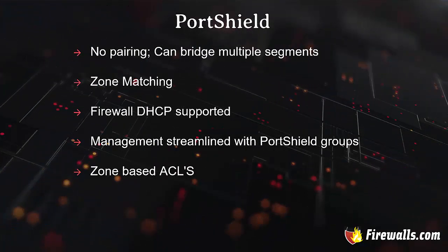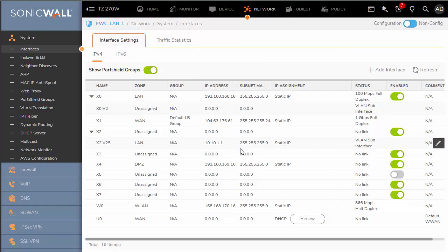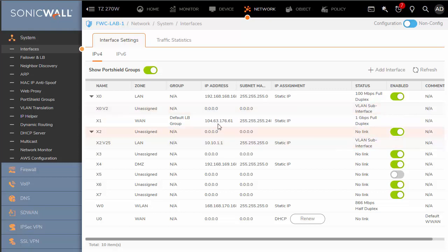Moving on to port shield mode. There is no pairing, but we can bridge multiple segments — in fact as many segments as you have interfaces. The interface must be assigned the same zone as the interface being port shielded to, and firewall DHCP is supported. These port shielded interfaces are lumped into port shield groups, making it easier to manage zone-based access control lists. Use port shield instead of layer 2 bridge when you need DHCP service from the firewall or you have a need for multiple segments.